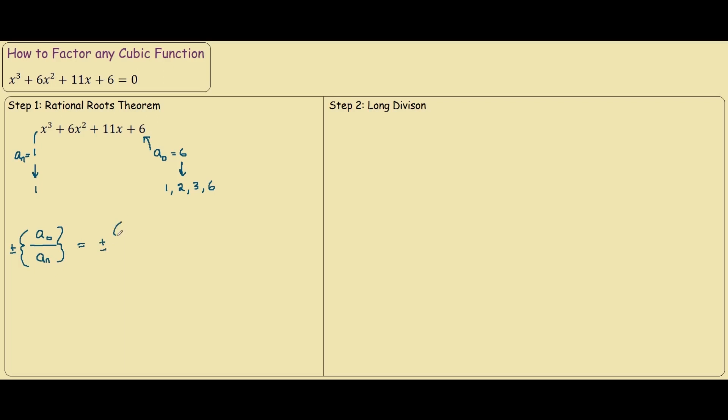we would find the plus minus of a0, so a factor of a0 is 1, divided by the factor of an, 1. And our next factor is 2, divided by 1, which is 2, 3 divided by 1 is 3, and 6 divided by 1 is 6.